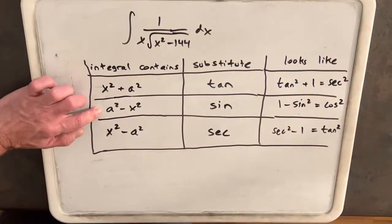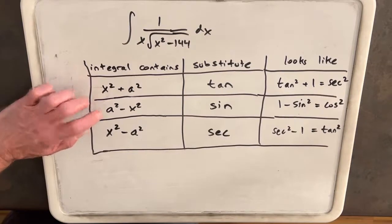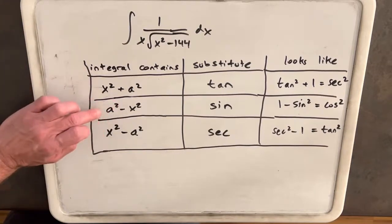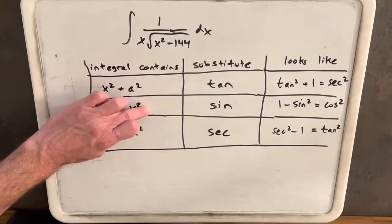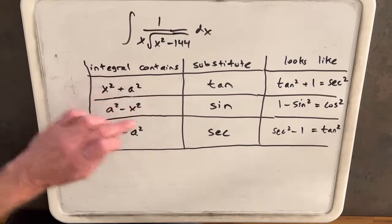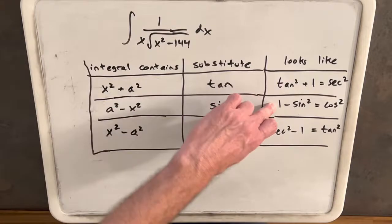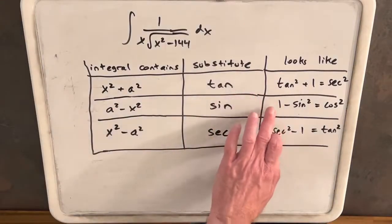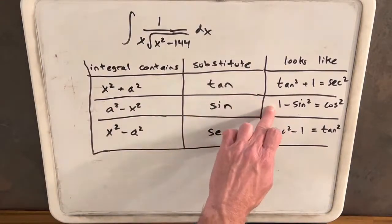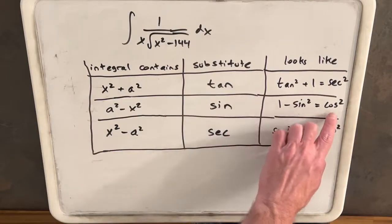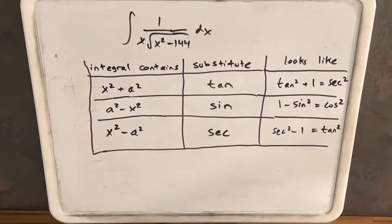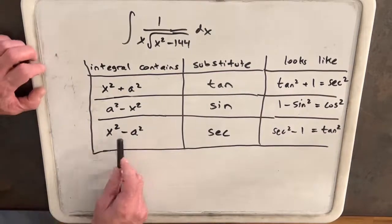If we have something that looks like a squared minus x squared, like 9 minus x squared, we could substitute sine for x. Then we'd have something in the form after factoring, like 1 minus sine squared, and then we can use cosine squared.